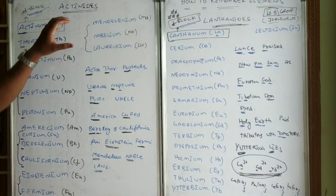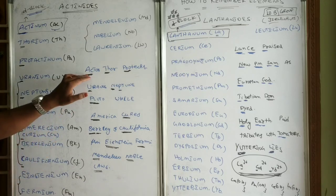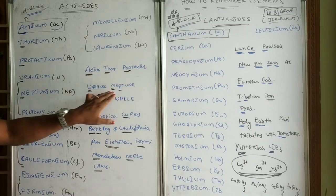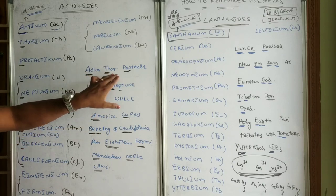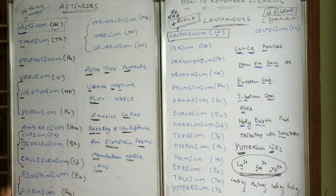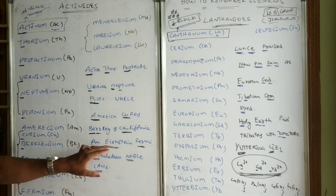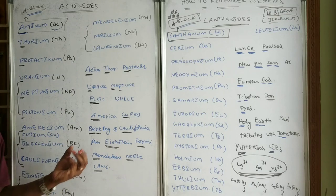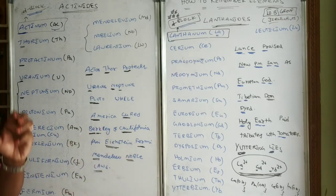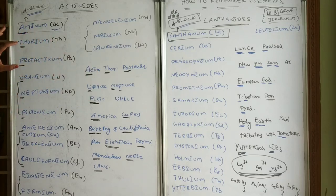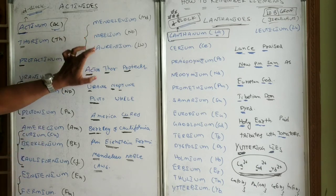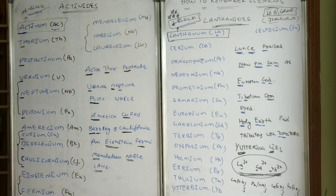To remember actinide elements, what is the mnemonic? Actor Thor protects Uranus, Neptune, Pluto - actinium, thorium, protactinium, uranium, neptunium and plutonium. America cures Berkeley and California from Einstein, Fermi, Mendeleev and Nobel laws. If you observe these f-block elements, thorium and protactinium are different. Uranus, Neptune, Pluto are three planets. America, Berkeley and California are three cities. And curium, einsteinium, fermium, mendelevium, nobelium and lawrencium are all scientist names.